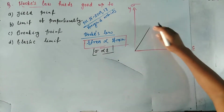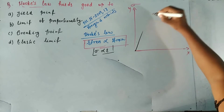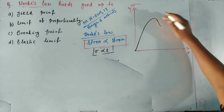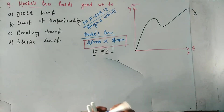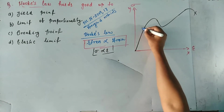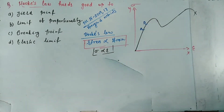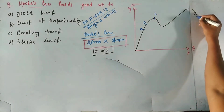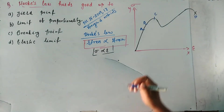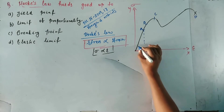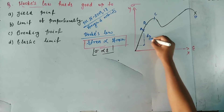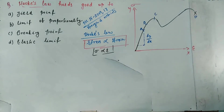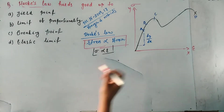Hooke's law states that stress is directly proportional to strain: sigma is directly proportional to epsilon, where sigma is stress and epsilon is strain. Now we draw a stress-strain diagram for Hooke's law. In this diagram, the y-axis has stress and the x-axis has strain, so its slope is dy/dx.